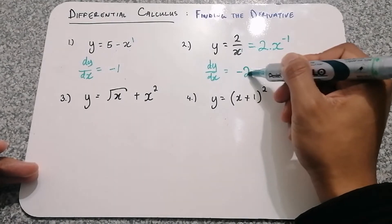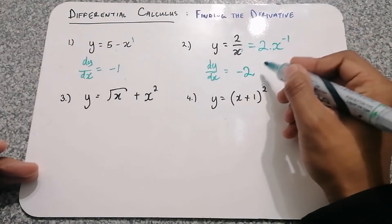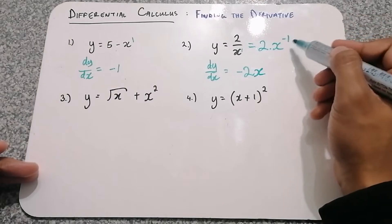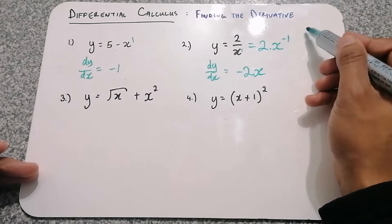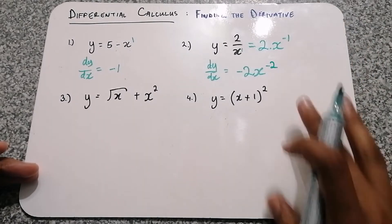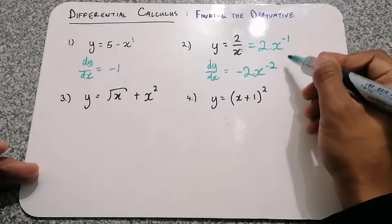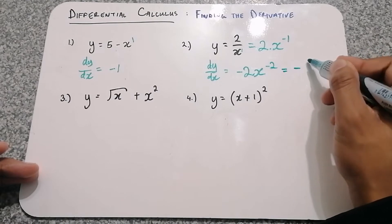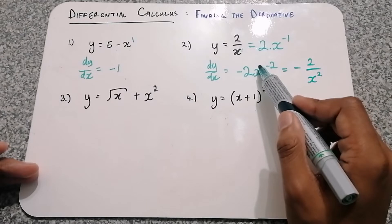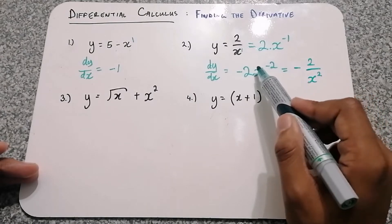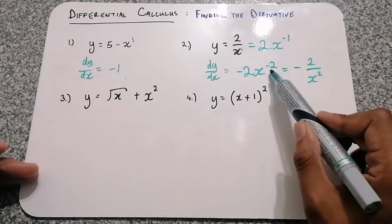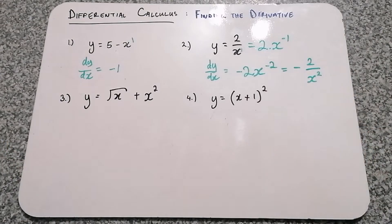So we have negative 2 — that's negative 1 times 2 — to give us x to the power of negative 2. That's negative 1 minus another 1, giving us negative 2. You can write this in a better way as negative 2 over x squared. I'm taking x to the power of negative 2 to the bottom, and you can see the exponent becomes positive. That's the exponent law.